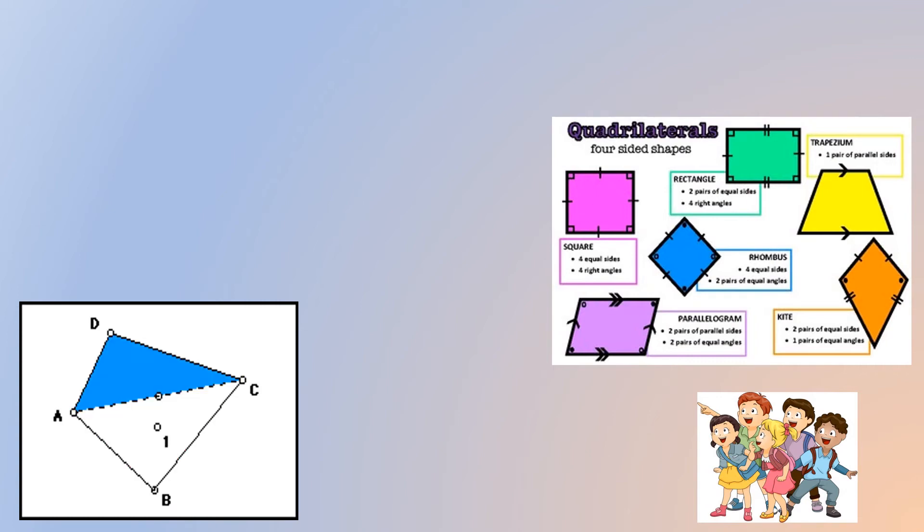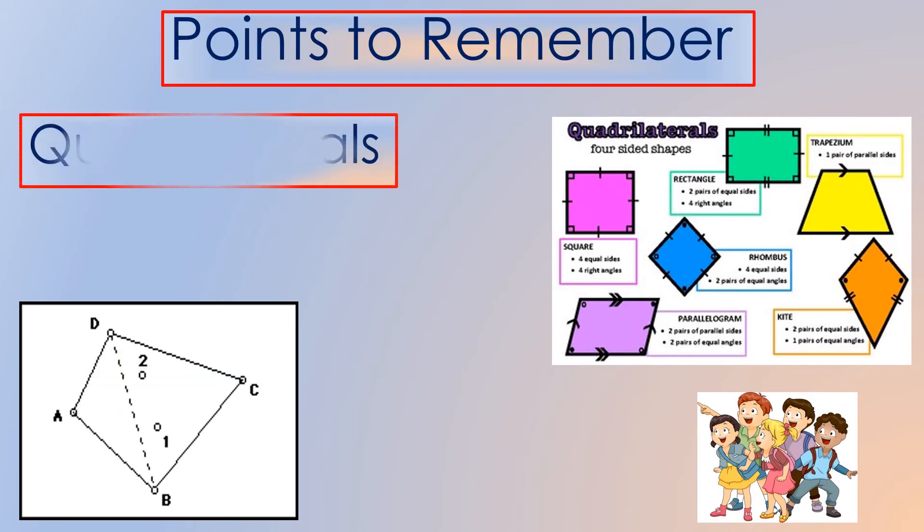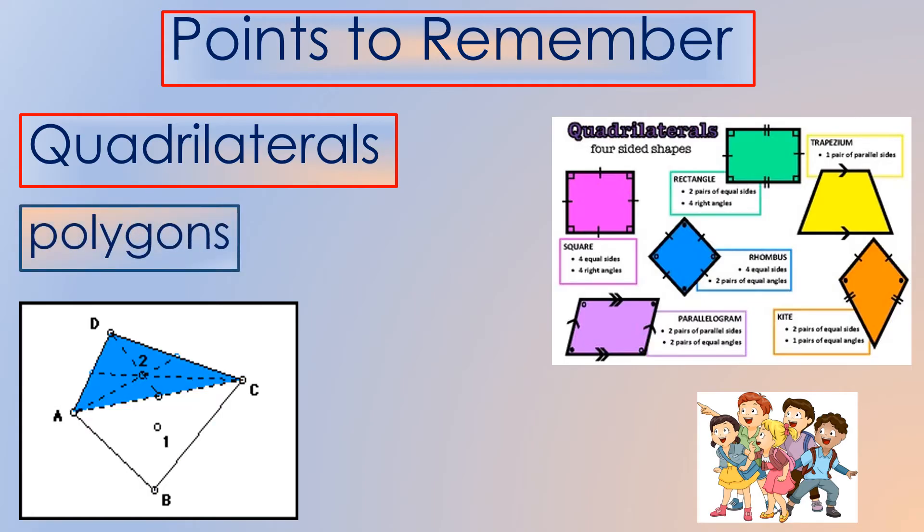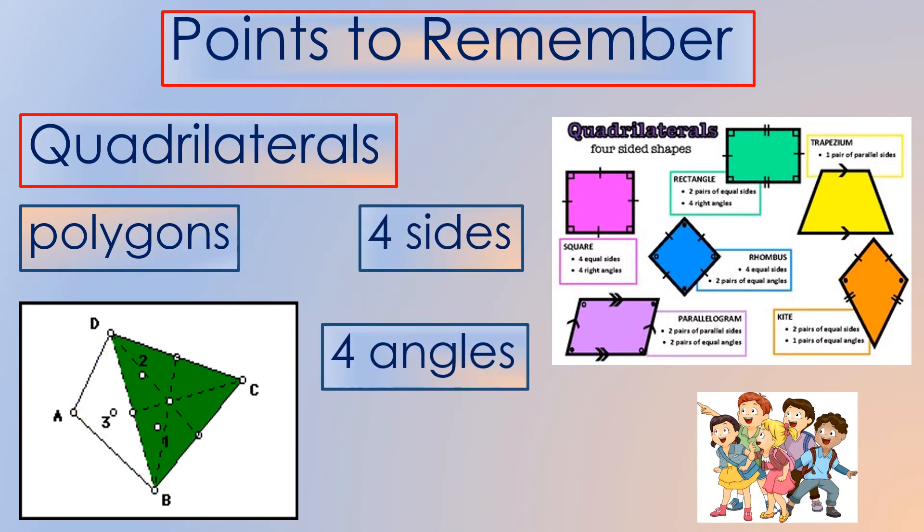Here are some points to remember about quadrilaterals. Quadrilaterals are simple closed figures with many sides, so we also call them polygons. Quadrilaterals are polygons with four sides and four angles. And the sum of the interior angles of a quadrilateral is always 360 degrees.